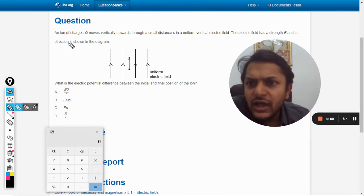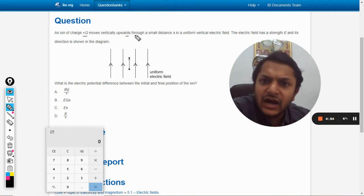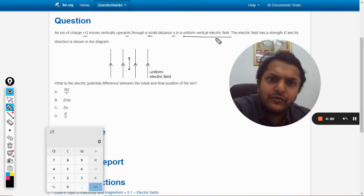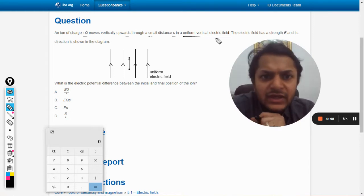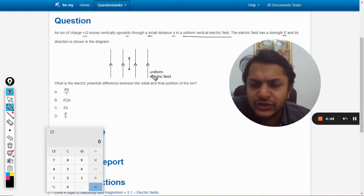Okay, so in this question an ion of charge +q moves vertically upwards through a small distance s in a uniform vertical electric field. The electric field has a strength E and its direction is shown in the diagram.